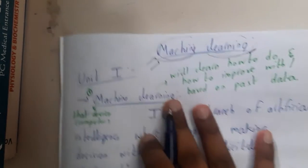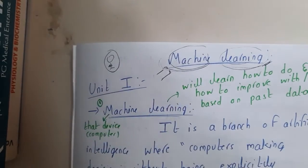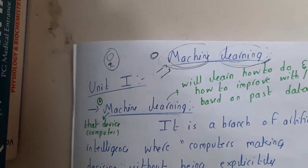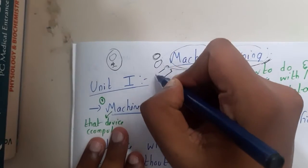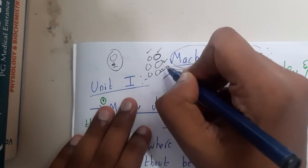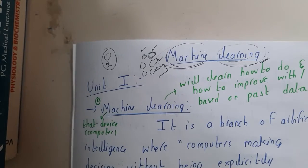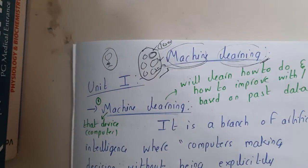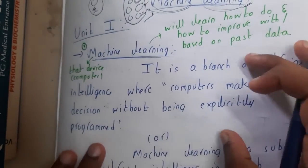Assume you have a pet robot that does not know what an orange is. You start teaching it — you bring 100 oranges and show it: this is an orange, this is an orange. After teaching it with all 100 oranges, if you bring the 101st orange, it will recognize it. The machine learned some properties from all 100 examples you gave it. This concept of a machine learning from data is called machine learning.